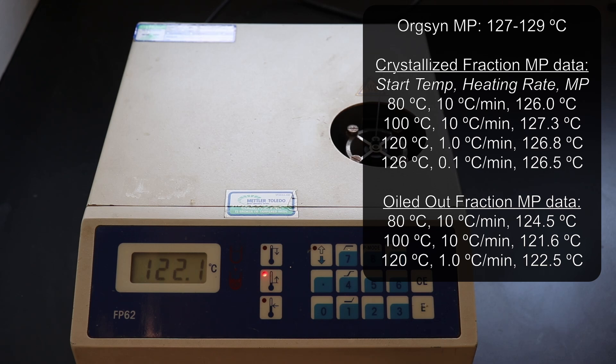However, the oiled material had a melting point ranging from 122 to 125°C, indicating it had some impurity or solvent inclusion that the crystallized material didn't. This motivated me to perform a second recrystallization of just the oiled material.